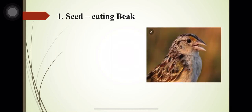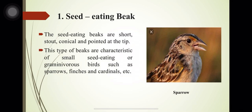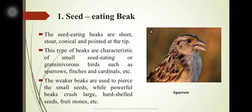The seed-eating beak is short, snouted, conical and pointed at the tips. This type of beak is characteristic of small seed-eating or granivorous birds such as sparrows, finches, and cardinals.